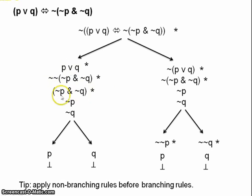Because if you branch, then you'd have to have done the conjunction rule twice on each branch. So it's generally a good idea to apply non-branching rules before you apply branching rules. It just makes the tree less cluttered.